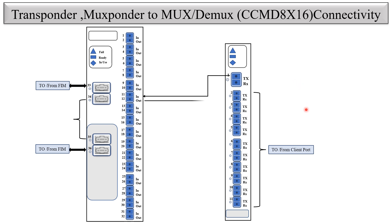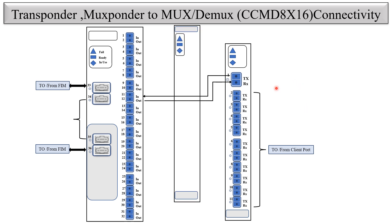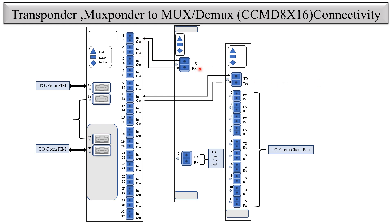The output of the same channel goes from the CCMD8x16 physical output and connects to the RX port of the line port. For every client port there is a corresponding line port. The TX port of the line port of the transponder is connected to the input of any channel, and the output of that channel is connected to the RX port of the transponder. This is the physical connectivity between the transponder/muxponder and the CCMD8x16, using the CCMD8x16 as the example here.